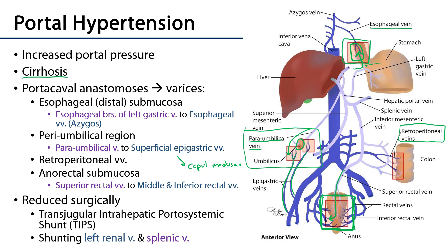Portal hypertension can be reduced surgically to prevent bleeds from these varices. The modern treatment is called a TIPS procedure — Transjugular Intrahepatic Portosystemic Shunt. An interventional radiologist guides a wire through the internal jugular vein, down through the brachiocephalic and superior vena cava, through the right atrium into the inferior vena cava, then into the hepatic veins and into the liver, where a shunt is introduced between the hepatic veins and the hepatic portal veins. This allows increased pressure in the portal system to flow directly into the caval system, bypassing the liver sinusoids.